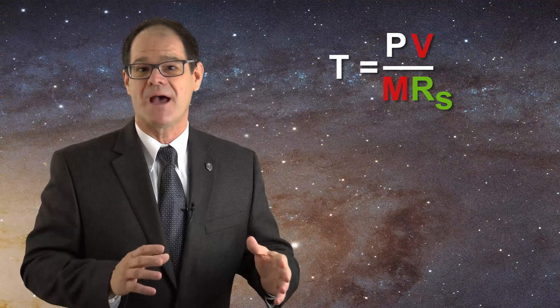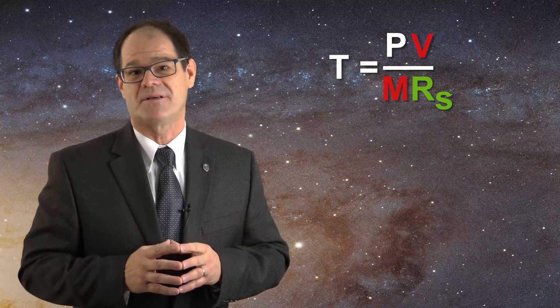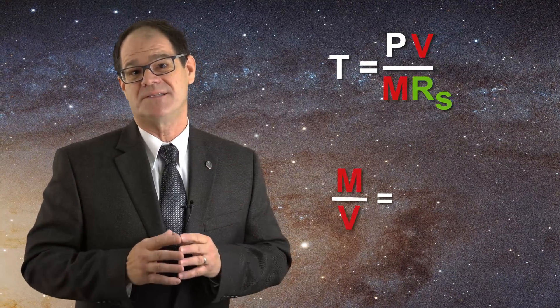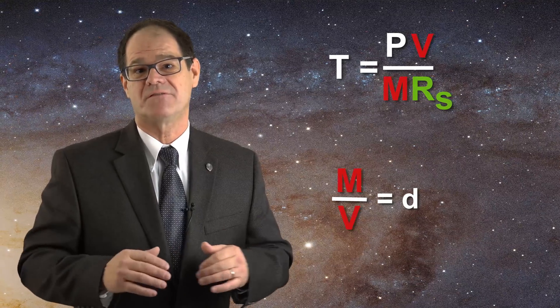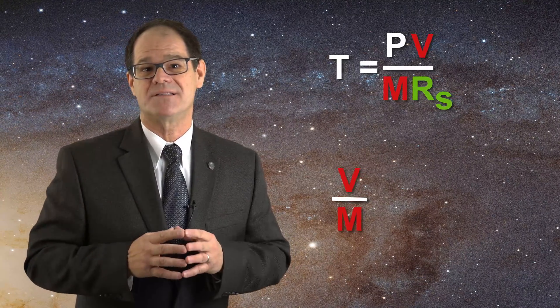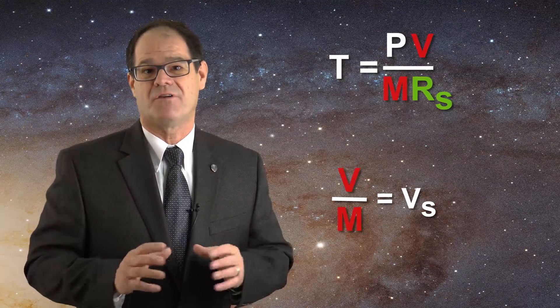So now we are dealing with two extensive properties on the right, volume divided by mass and a constant R sub s. But we know that the mass divided by the volume is equal to the density which is intensive. Volume divided by mass is therefore also an intensive property which is known as specific volume.